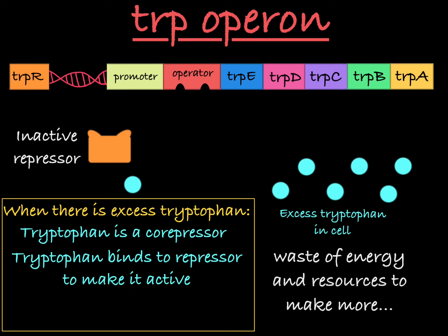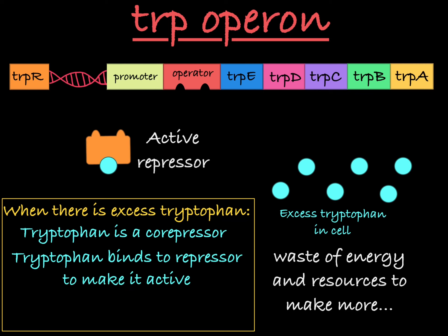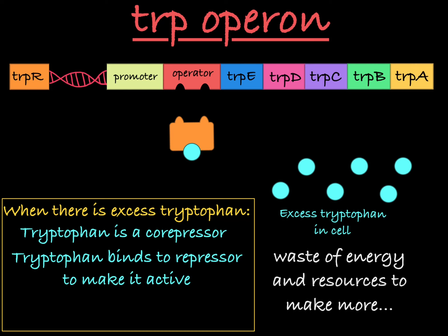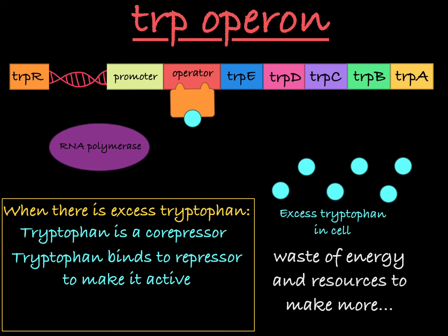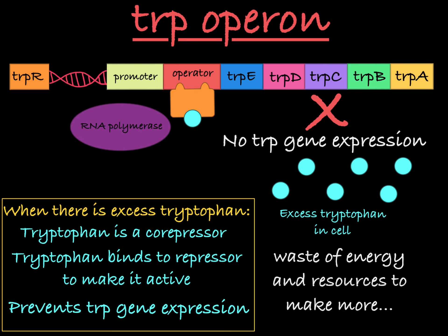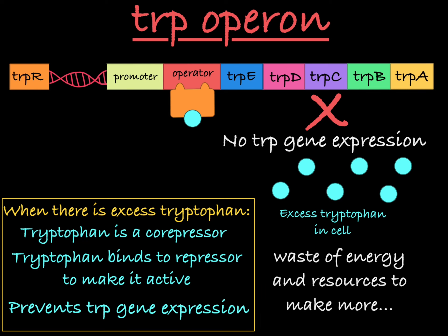Tryptophan will bind to the inactive repressor, changing its shape and making it active. In this state, the DNA binding region of the trp repressor is able to bind to the operator, allowing it to prevent RNA polymerase from transcribing these genes. In this way, a high concentration of tryptophan in the environment will limit transcription of these structural genes, saving the cell lots of energy.